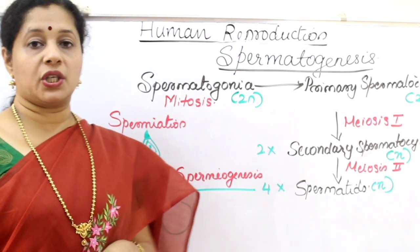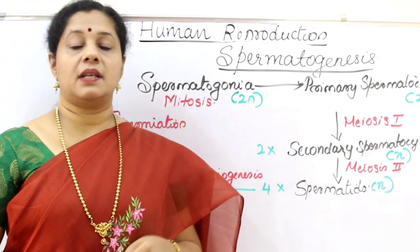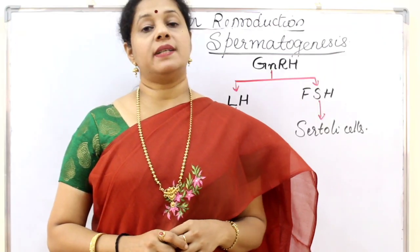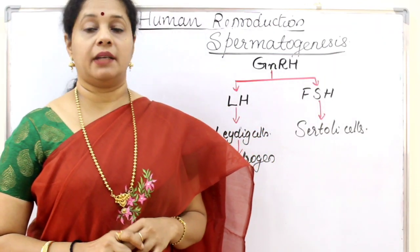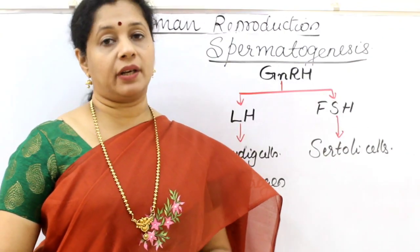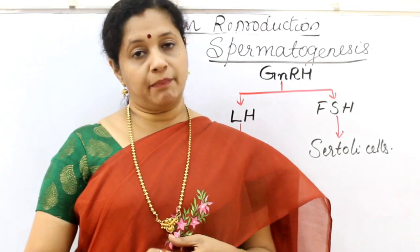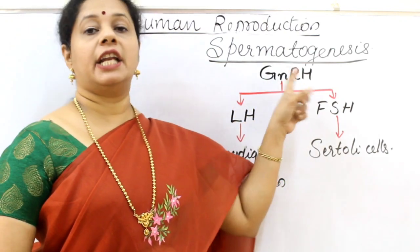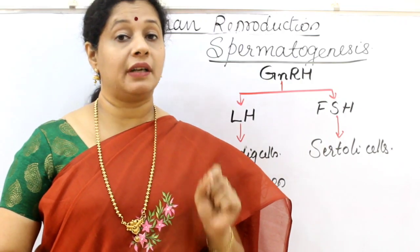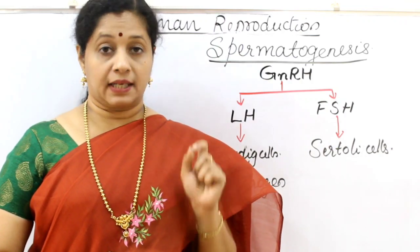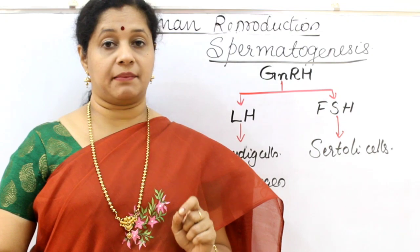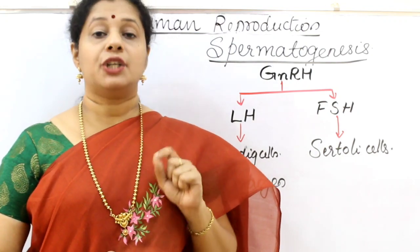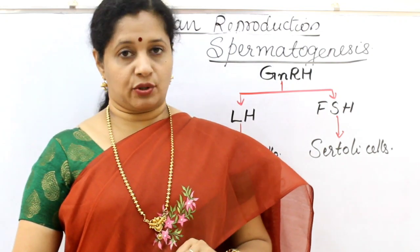Spermatogenesis starts at puberty in males and is a hormone-regulated mechanism. During puberty, a hormone called GnRH — gonadotrophic releasing hormone — secreted from the hypothalamus will stimulate the anterior pituitary to secrete two gonadotrophins.